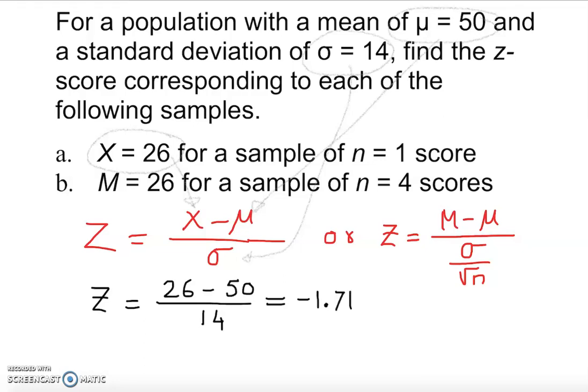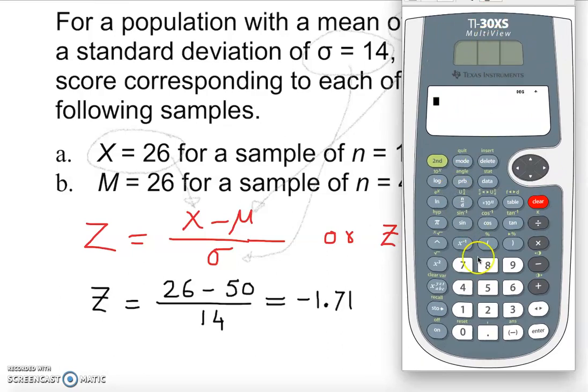I can show you with any little calculator. This calculator has a nice built-in option. You can just put a fraction up here. So 26 minus 50 over 14. Or someone will say, I get a fraction. No problem, you use double arrow. That gives you negative 1.71. If you don't want to use that concept, you can do 26 minus 50, then you must enter, then divide it by 14.